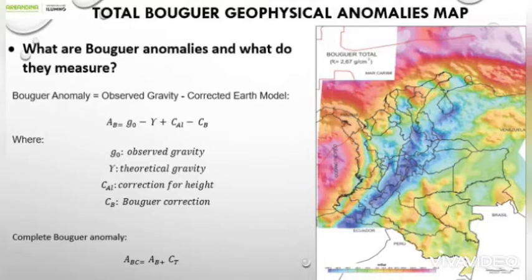Total Bouguer geophysical anomalies maps. What are Bouguer anomalies and what do they measure? Bouguer anomalies reflect anomalous masses — masses with density above or below the reference density, for example 2.67 grams per cubic centimeter.